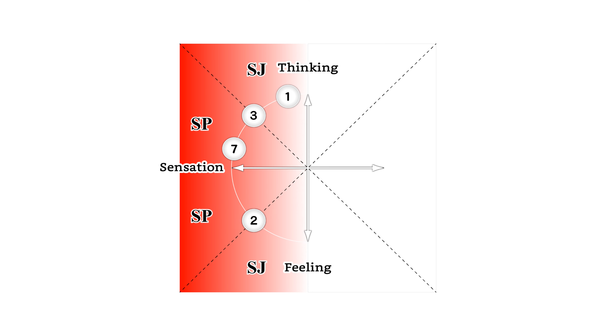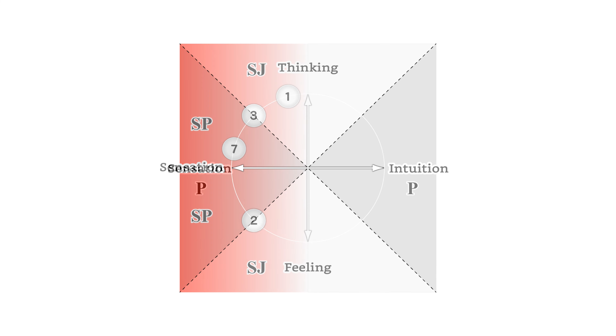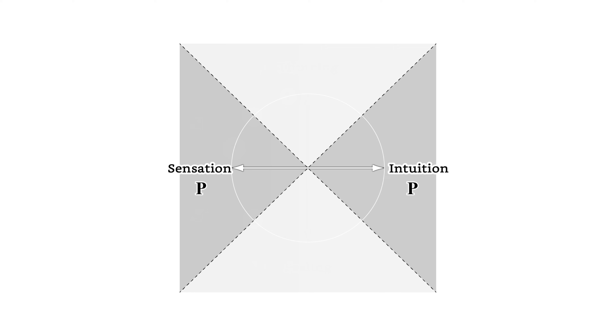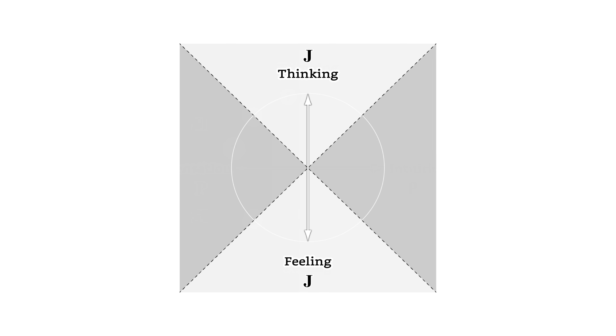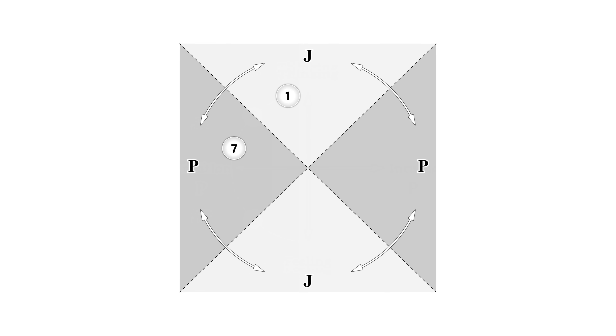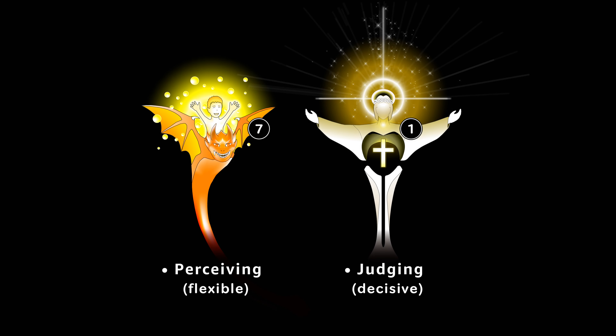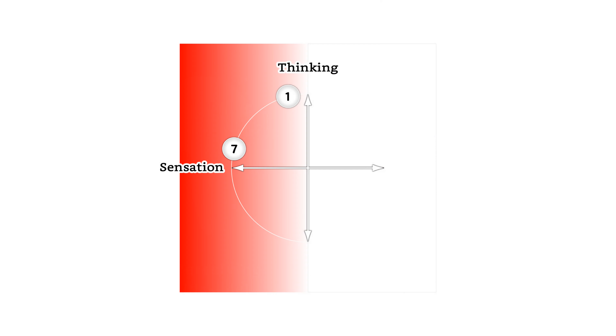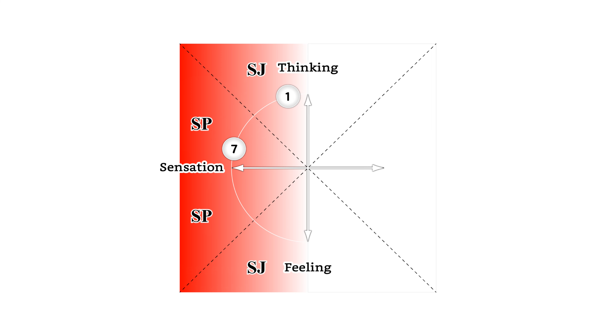As we can see in this figure, Type 7 tends to be a perceiving type, and Type 1 tends to be a judging type. Perceiving types have a tendency to perceive many things and choose what they want from many options — they can be called flexible types. On the other hand, judging types have a tendency to judge and stick to their decisions in a decisive manner — they can be called decisive types. Type 7 is a flexible type, and Type 1 is a decisive type. Type 7 tends to have the SP temperament, and Type 1 tends to have the SJ temperament. The SP is called the experiencer, and the SJ is called the traditionalist.